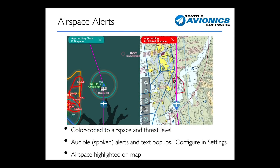FlyQ 6 also expands considerably on the alerting system for terrain and obstacle avoidance. In particular, we're now adding airspace alerts. As you can see on the picture on the screen, the airspace alerts work whether you're using the new digital map on the left or if you're using one of the scan charts — for example, a sectional on the right-hand side. You can also see that the airspace alerts are color-coded to the airspace that they belong to.